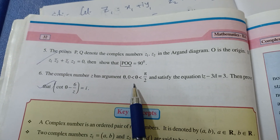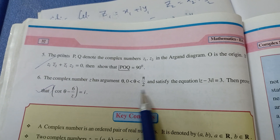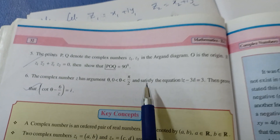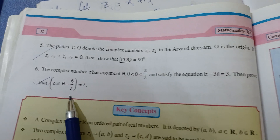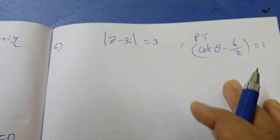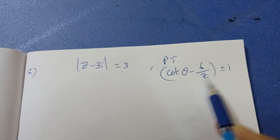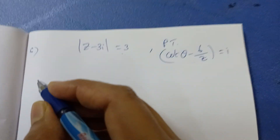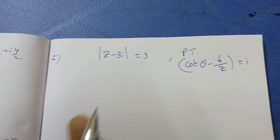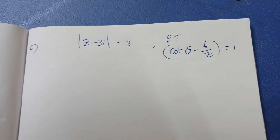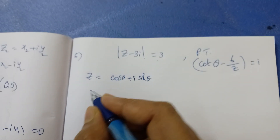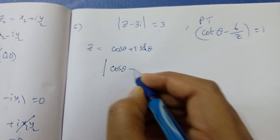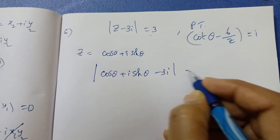Next question: a complex number z has argument θ where 0 < θ < π/2 (first quadrant) and satisfies |z − 3i| = 3. Prove that cotθ − 6/z = i. Since z has argument θ, we write z = cosθ + i·sinθ. Substituting: |cosθ + i·sinθ − 3i| = 3.